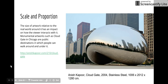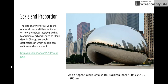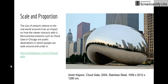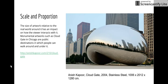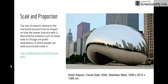The size of an artwork relative to the real world around it has an impact on how the viewer interacts with it. Monumental artworks such as Cloud Gate in Chicago are public destinations in which people can walk under it and around it. This is Anish Kapoor's Cloud Gate, famously in Millennium Park in Chicago.